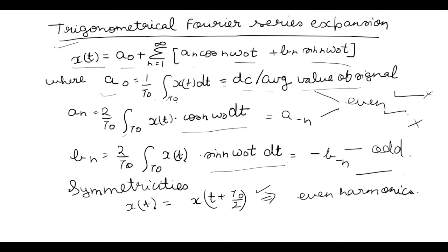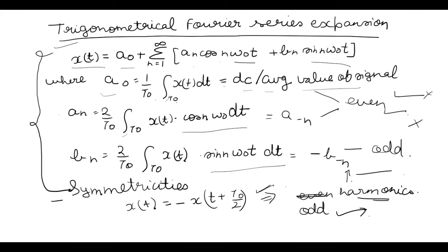Here I am talking about harmonics, which means n. So even terms of n would be present if this is true. And if x(t) equals minus of x(t plus T0 by 2), then odd harmonics will be present. I hope you understand this Fourier series expansion and symmetricities.